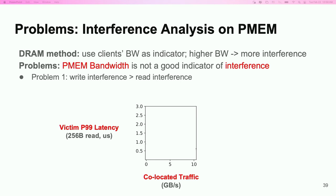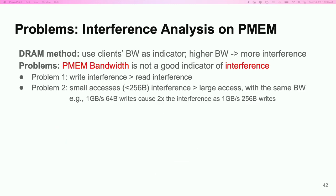We plot both cases when the interference traffic is reads and when it is writes. As we can see, writes cause far more interference than reads in PMEM, and bandwidth is not a reliable indicator of interference. In the paper, we also discuss additional issues — for example, inefficient small accesses smaller than 256 bytes can cause more interference than efficient accesses with the same bandwidth. Please find more details in the paper.